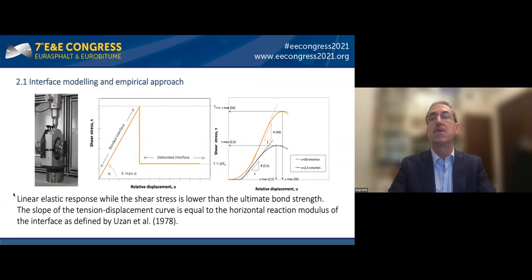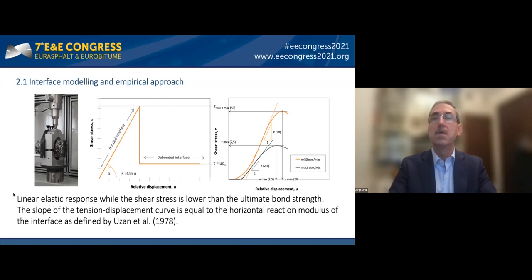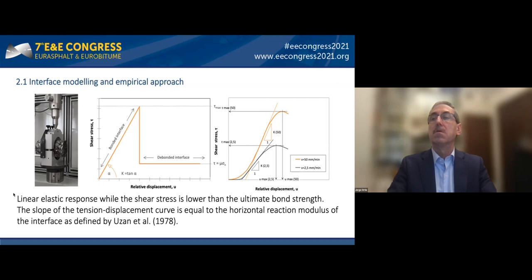This treatment does not damage the bituminous interfaces or their strength, as has been repeatedly verified by direct shear and direct tensile tests. On the contrary, some precedents show that milk-of-lime can improve the bituminous interfaces' shear strength. The reported improvements were found when dusty conditions were simulated in other research programs. To characterize real interspaces, we used the Uthans model, which proposes using a linear relation between shear stress and relative displacement, defining a horizontal reaction modulus k.